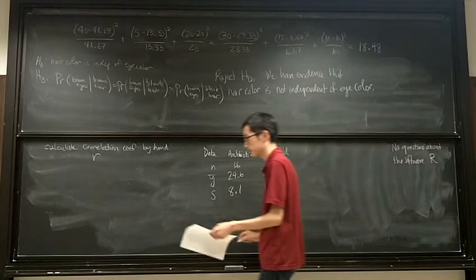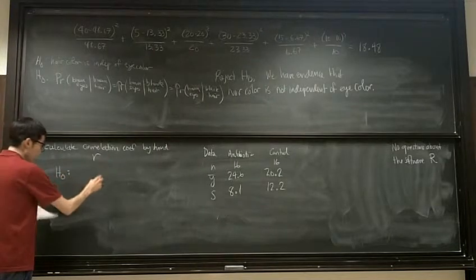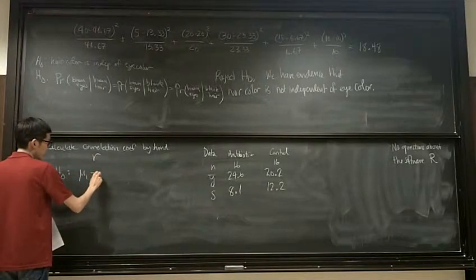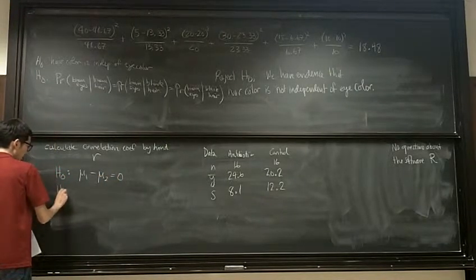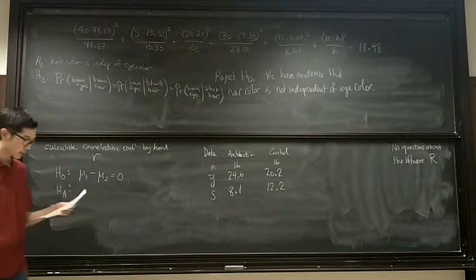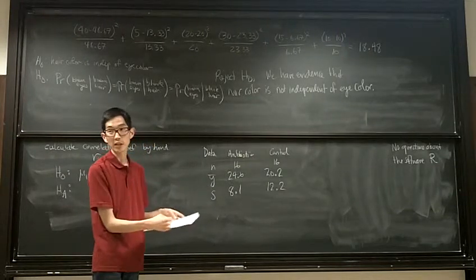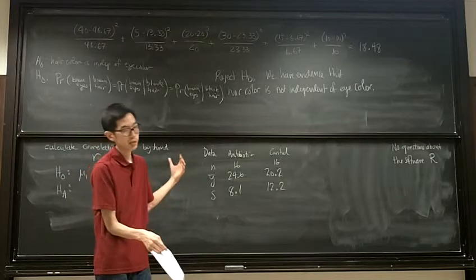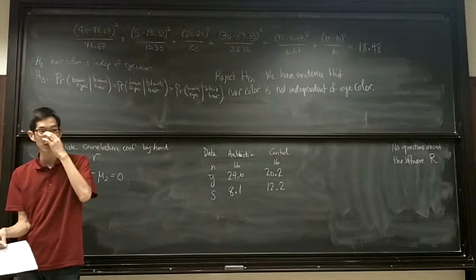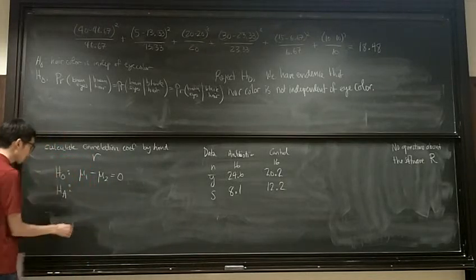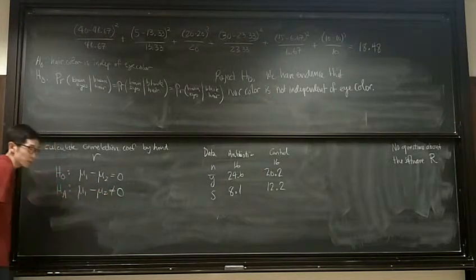In this case, our null hypothesis is that the two means are equal. Or that there's no difference between the mean of the two groups. And then the alternative, the test says perform a test to see if there is a difference in the mean time. It's not implying do we expect the antibiotic group to take longer or the antibiotic group to take less time. We just said, is there a difference? So in that case, I would say mu1 minus mu2 doesn't equal zero.